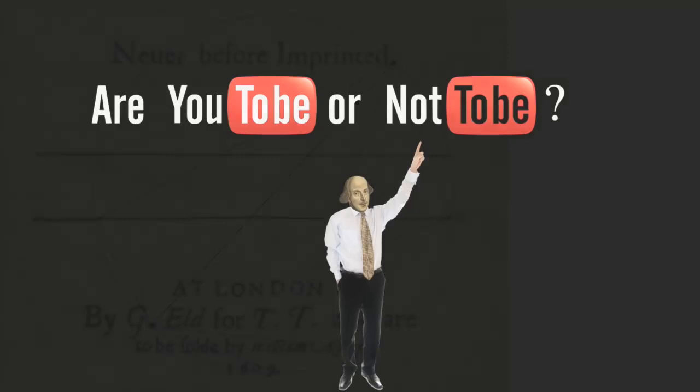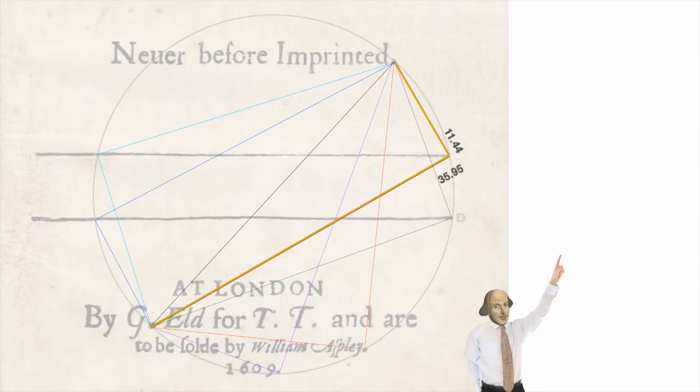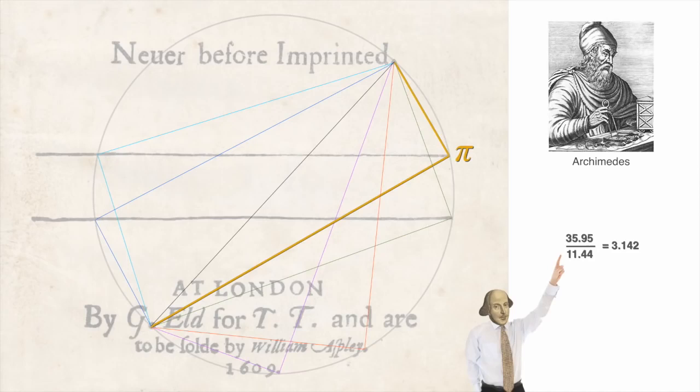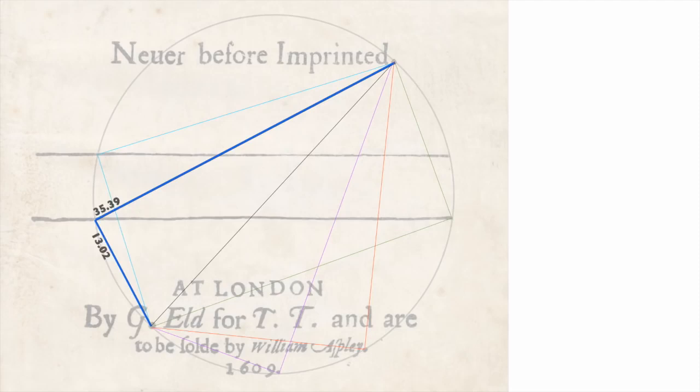Such as this divided by this equals this, which is, of course, pi. Accurate to three decimal places, the world's most well-known mathematical constant, the ratio of a circle's circumference to its diameter. Archimedes calculated it almost this accurately around 287 BCE, so it's no surprise that Shakespeare would know this.